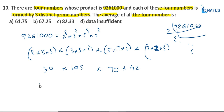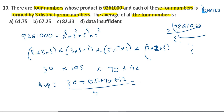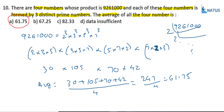Average = (30 + 105 + 70 + 42) / 4 = 247 / 4 = 61.75. Option A is the correct answer. This is set 14 and we will meet again on set 15 with 10 different examples. Thank you.